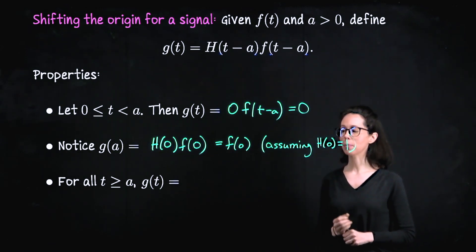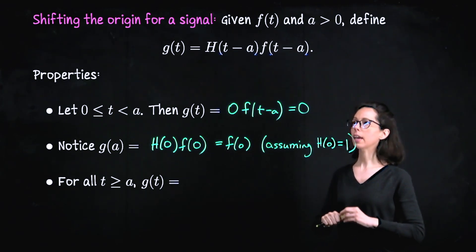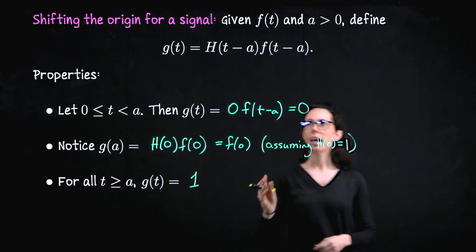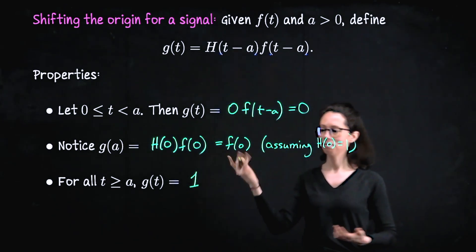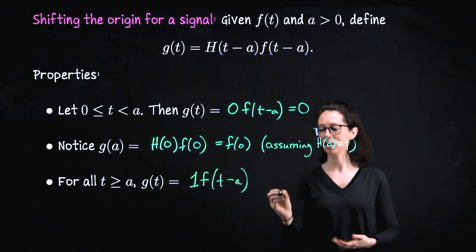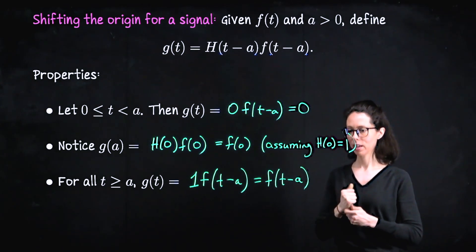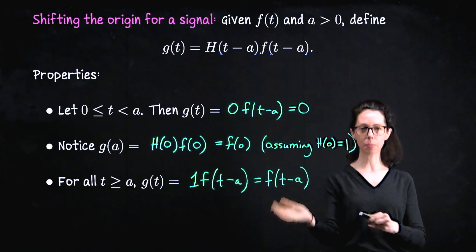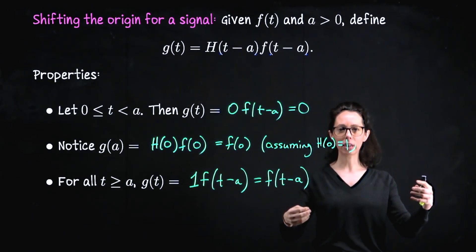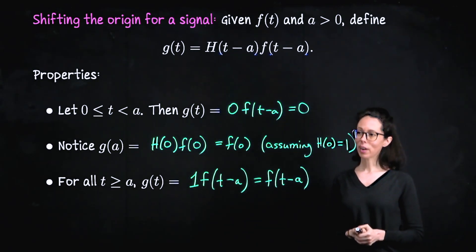And when time is greater than a, we're plugging positive values into the Heaviside function, giving one, times f of t minus a — so the result is just f of t minus a. This whole expression is being translated: we're taking our signal as normally graphed and just moving it to the right on the t-axis.